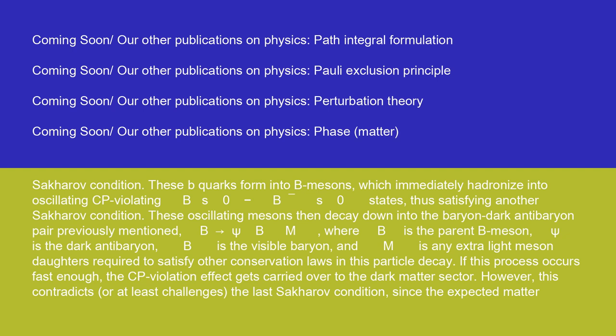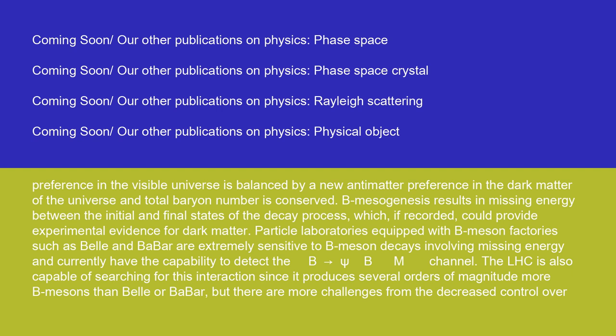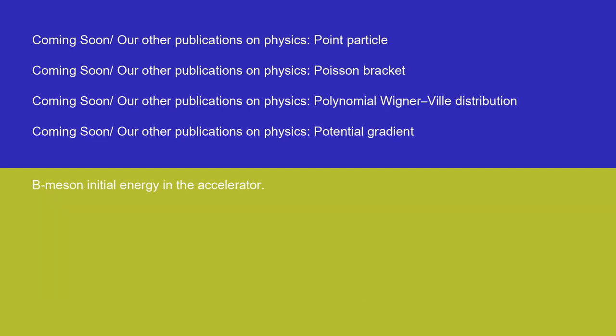However, this contradicts or at least challenges the last Sakharov condition, since the expected matter preference in the visible universe is balanced by a new antimatter preference in the dark matter of the universe, and total baryon number is conserved. B mesogenesis results in missing energy between the initial and final states of the decay process, which if recorded could provide experimental evidence for dark matter. Particle laboratories equipped with B meson factories such as Belle and BaBar are extremely sensitive to B meson decays involving missing energy and currently have the capability to detect the B → ψ + b + M channel. The LHC is also capable of searching for this interaction since it produces several orders of magnitude more B mesons than Belle or BaBar, though there are more challenges from the decreased control over B meson initial energy in the accelerator.